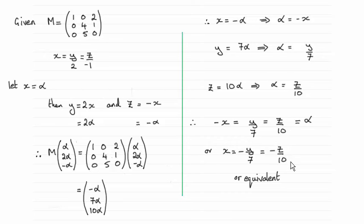How did I do it? Well, what I've done is I've taken any general point, let's say x equals alpha, on this line, and then written y in terms of alpha. y would equal 2x, so that would be 2 alpha, and z would equal minus x, so that would be minus alpha.